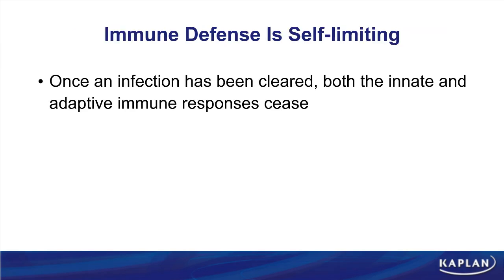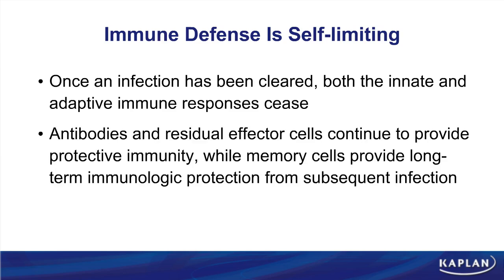One of the things that is also important to understand about the immune system is that we have this whole system designed to kill things, and yet somehow draw a fine line between self versus non-self. There are really a lot of control mechanisms that the immune system has in order to turn itself off — so it's what we call self-limiting. Once we have an infection and that infection has been cleared, both innate and adaptive immunity turn themselves off. As far as adaptive immunity, we have antibodies and residual effector cells like T cells and B cells that provide immunity, and long-lasting memory cells that survey the body looking for that same antigen again to protect us from subsequent infections. Remember, the adaptive immune response is highly specific.